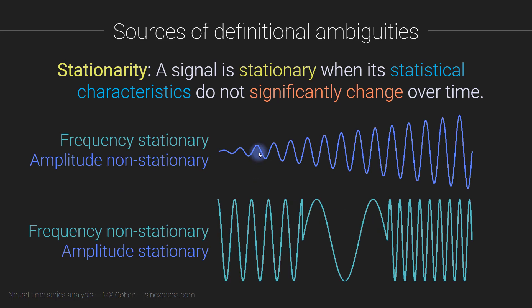Here are two more examples of signals that are stationary in some features but non-stationary in others. This first signal is frequency-stationary but amplitude non-stationary — the frequency stays the same over time but the amplitude increases. The second signal is the opposite — the amplitude stays the same but the frequency abruptly changes across three windows. You can also see that stationarity is window-size dependent: if you only look at the first third of a signal, it may appear highly stationary within that window. This is important for time-frequency analysis — there can be brief moments of stationarity embedded within larger non-stationarities.